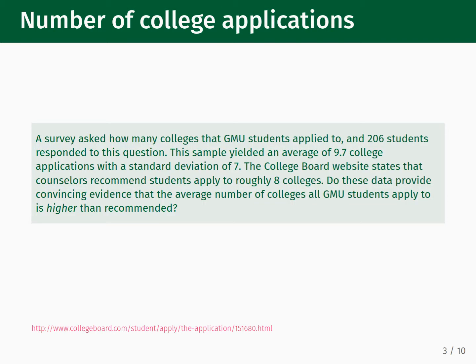During this lecture, we will use the following scenario as an example. A survey asked how many colleges GMU students applied to, and 206 students responded. This sample yielded an average of 9.7 college applications with a standard deviation of 7. The College Board website states that counselors recommend students apply to roughly 8 colleges. Do these data provide convincing evidence that the average number of colleges all GMU students apply to is higher than recommended?